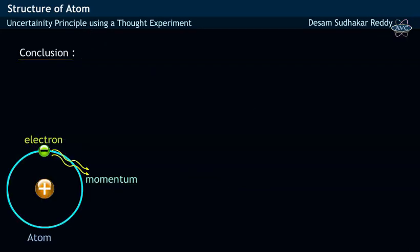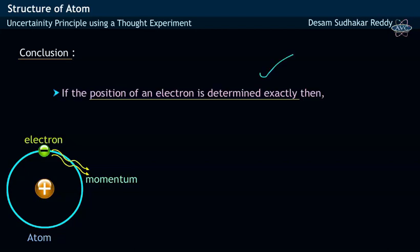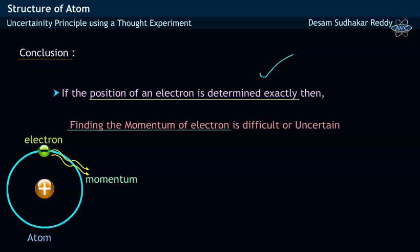From this thought experiment, Heisenberg has concluded that if the position of an electron is determined exactly, then finding of momentum of an electron would be uncertain.